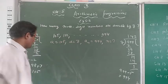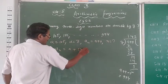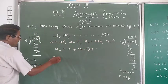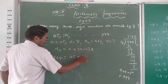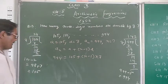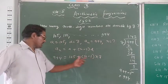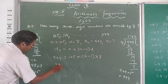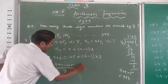We apply the same formula: an equals a plus n minus 1 times d. We have an equals 994, a is 105, and n minus 1 into 7.